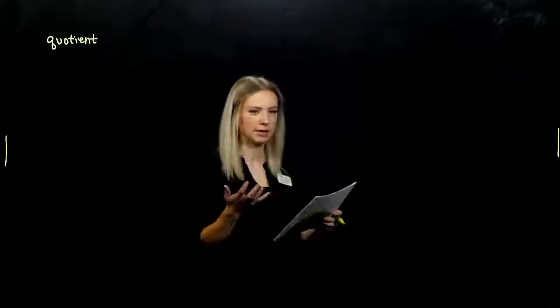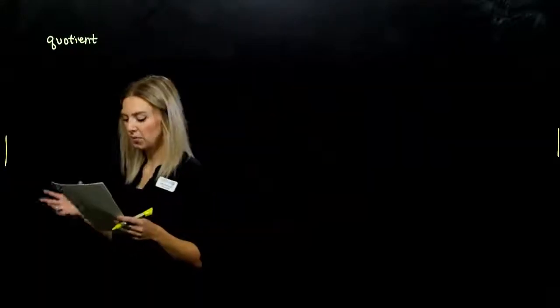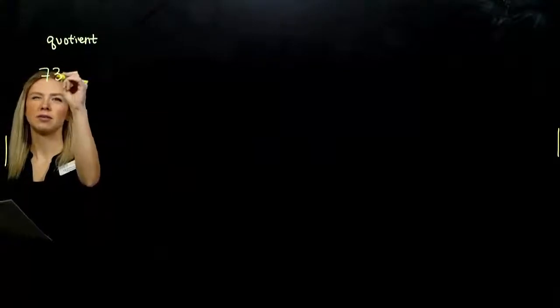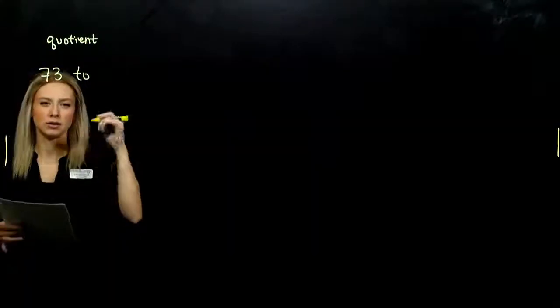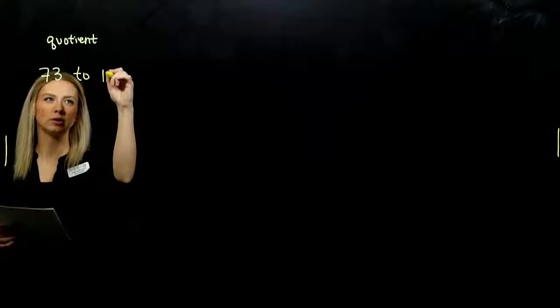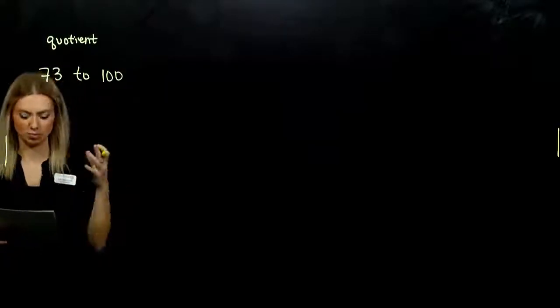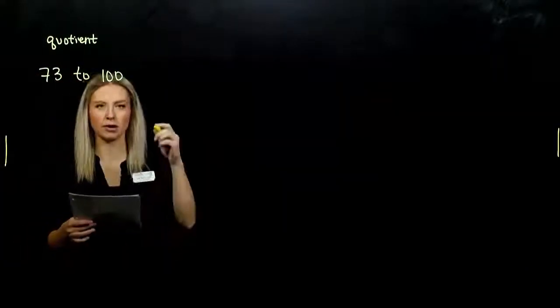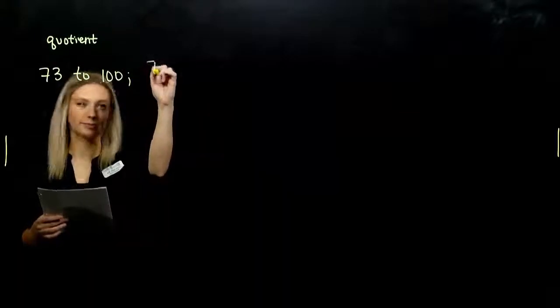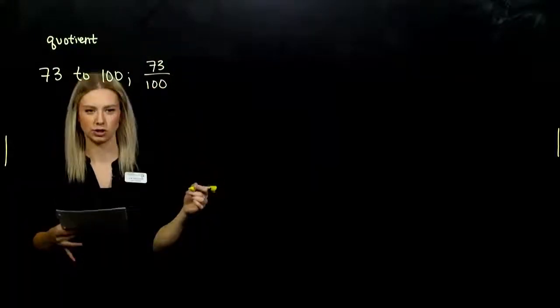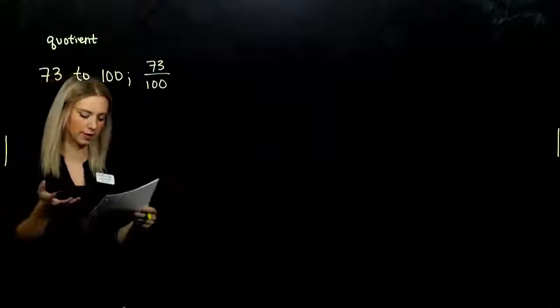We've seen a few examples in a different context: percentages. For example, 73% is the ratio of what? 73 parts out of, or to, 100. Since the percentage means per 100, another way we could set it up is as a quotient, as a fraction. Quotient is just a fancy word for fraction.